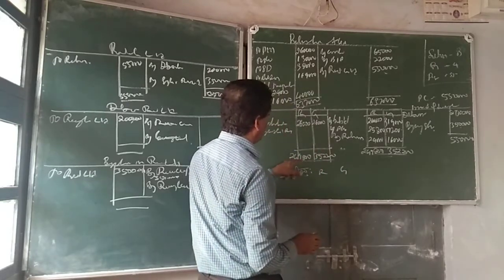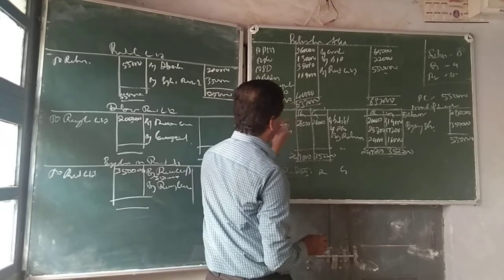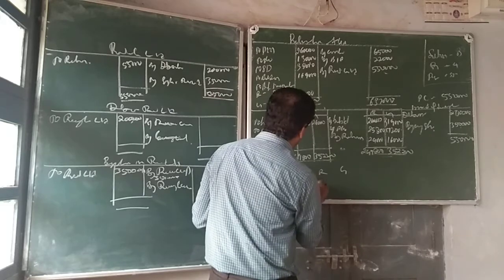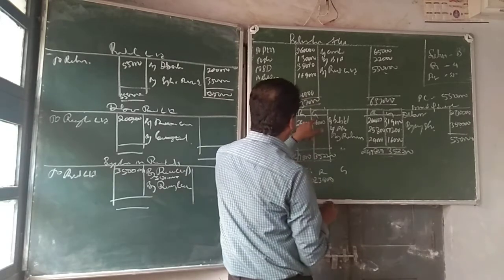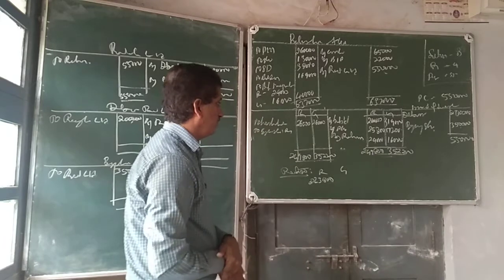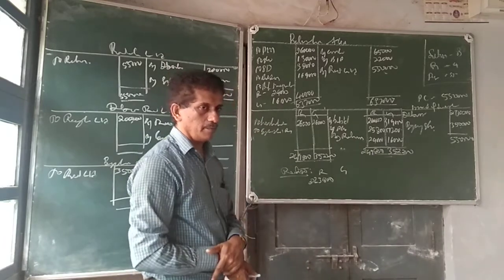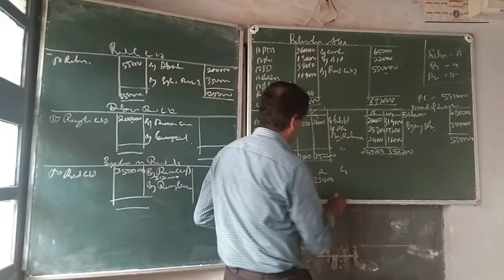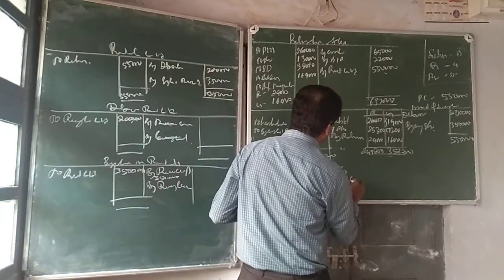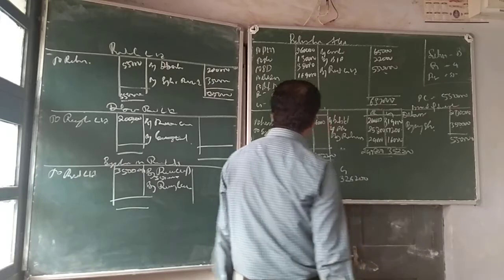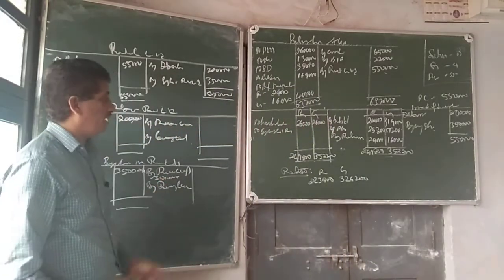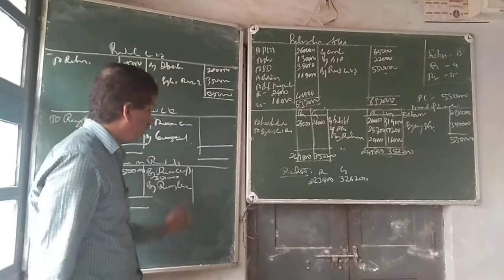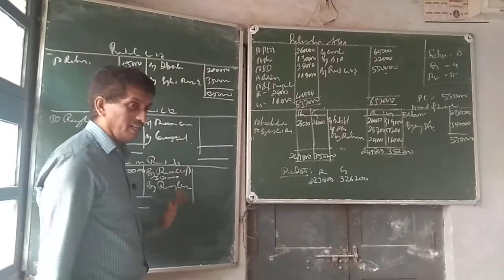2,28,800 and 2,34,800. Three lakh twenty six thousand two hundred. Three lakh twenty six thousand two hundred — you use the equity shares ratio and profit sharing ratio to get this.